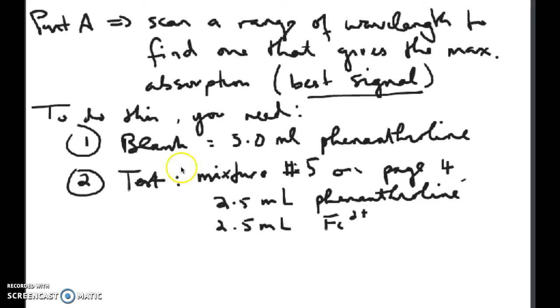To do this, you're going to need a couple of different solutions. The first one is your blank, which is just the phenanthroline solution, one of your reactants. The other one is mixture number five on your lab procedure, which is 2.5 milliliter phenanthroline and 2.5 milliliter iron, your two reactants mixed in equal volumes.